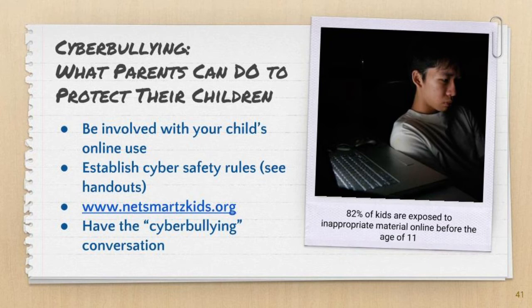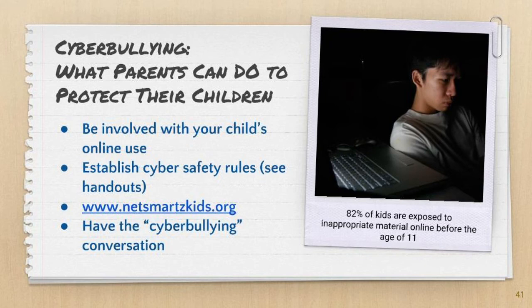Research suggests that 82% of kids are exposed to inappropriate material online before the age of 11, which is pretty concerning. There are resources available to help guide conversations with your kids and establish online rules and expectations at home. Topics of discussion might include not sharing personal information such as birth date, address, or phone number, not sharing passwords with others, and more significant issues such as meeting online friends or sharing pictures without parent permission. While many sites have age guidelines, it's relatively easy for someone to put in false information and gain access. netsmartkids.org is an online resource utilized by Boy Scouts of America to learn more about internet and cyber safety, and parents can use it as a tool for younger students.